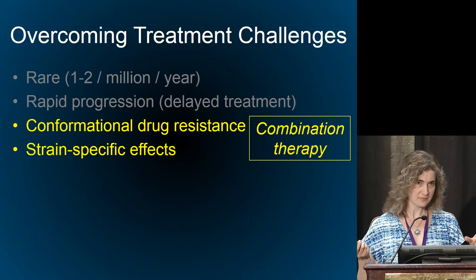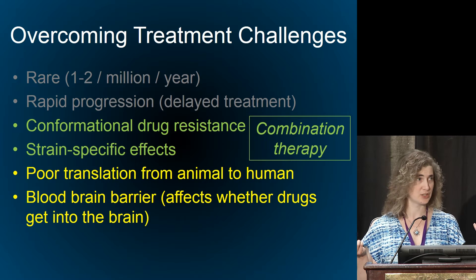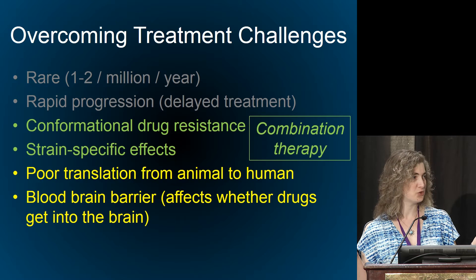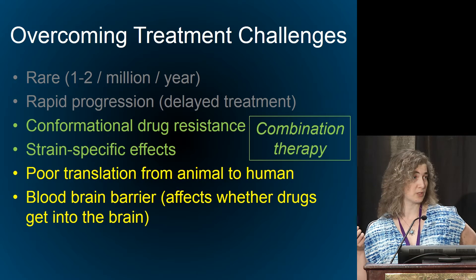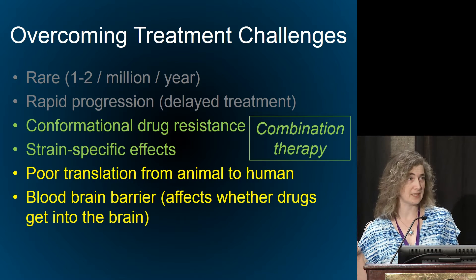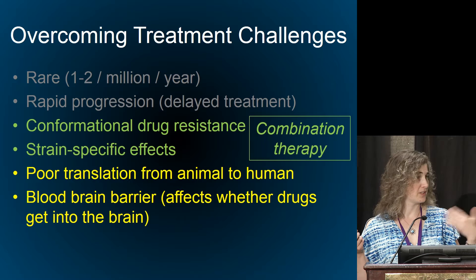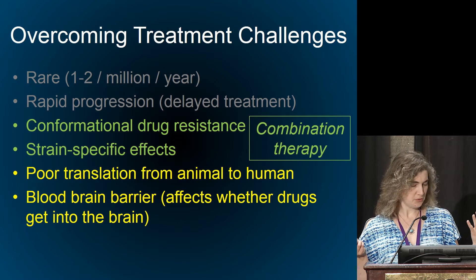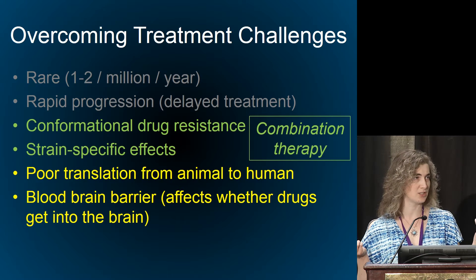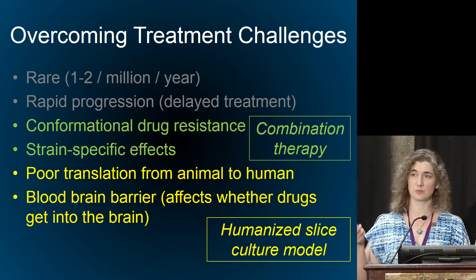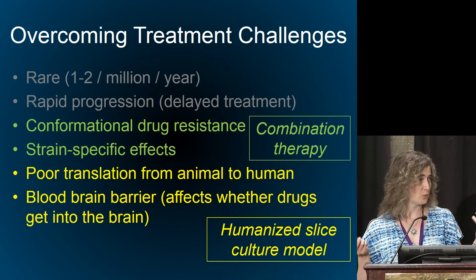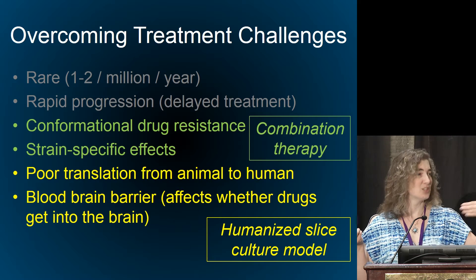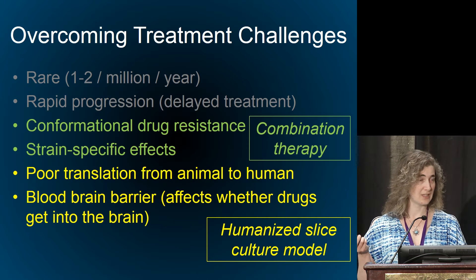There's also poor translation moving from animal to human, and the blood-brain barrier is a hindrance to many drugs. Yes, you can put things directly into the intrathecal space, but ideally we'd like something that can cross more readily. That's where we need a humanized model — something as translatable as possible in a dish, as was discussed with possible astrocyte models — so we have a higher chance of moving it into humans.